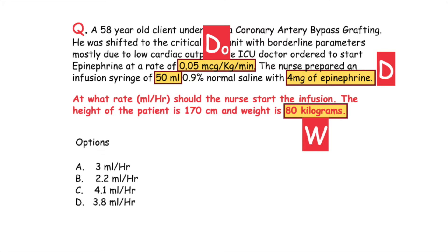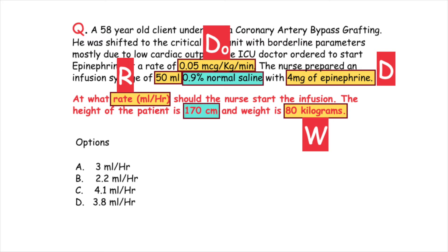W, the weight of the patient, is 80 kg. We have to calculate R, the rate of drug infusion. The data that is irrelevant and not required in the formula is the concentration of the diluent — here 0.9% normal saline — and the height of the patient, 170 cm.